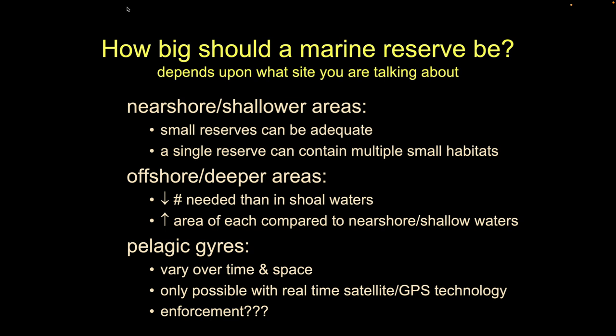As we go farther offshore, the number of MPAs needed in a network tends to go down, but any individual MPA tends to need to be bigger, because those tend to be more wide-ranging organisms — think tuna — as opposed to nearshore species like barnacles or urchins.